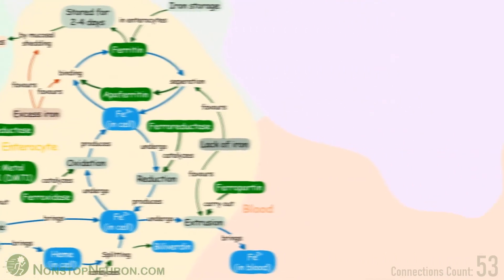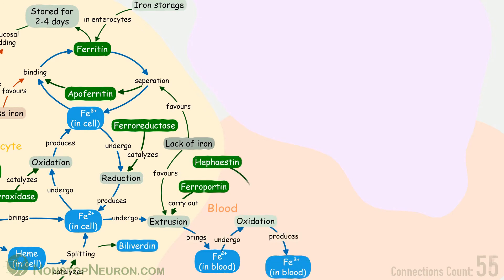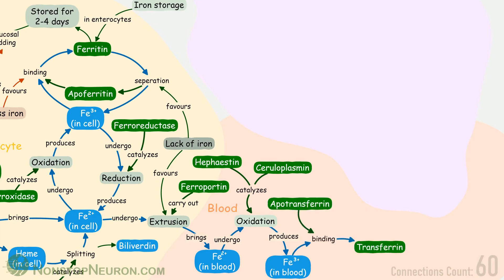Now let's go to blood. After extrusion from the enterocyte, ferrous iron undergoes oxidation to produce ferric iron. This oxidation can be catalyzed by hephaestin present on the enterocyte membrane or ceruloplasmin present in the blood. Ferric iron then binds with apotransferrin to form transferrin. Transferrin is the transport form of iron.